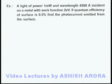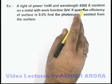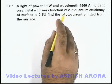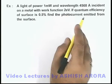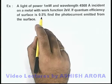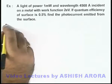In this example we are given that a light of power 1 milliwatt and wavelength 4560 angstrom incident on a metal with work function of 2 electron volts. And we are given that if quantum efficiency of a surface is 0.5 percent, we are required to find the photocurrent emitted from this surface.